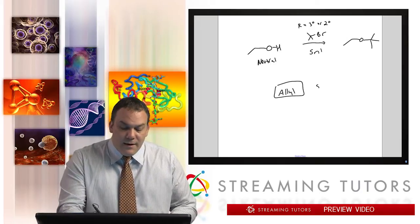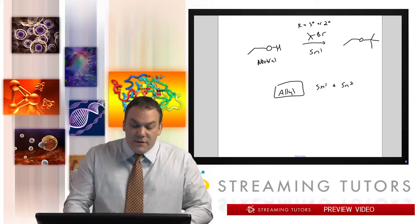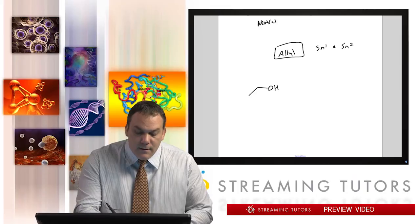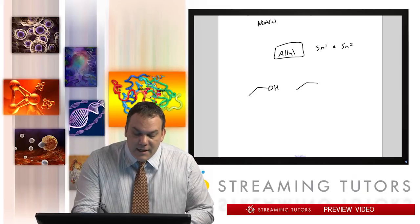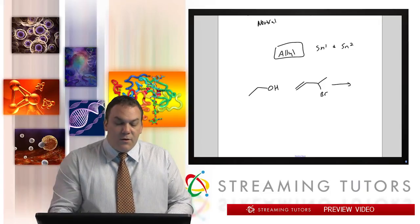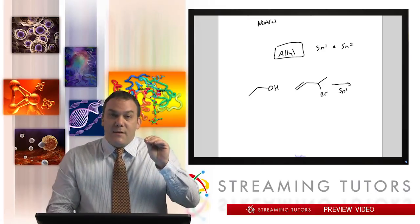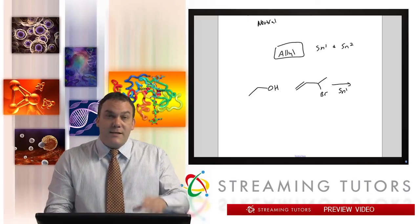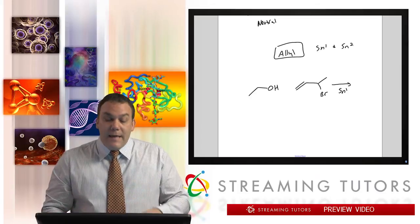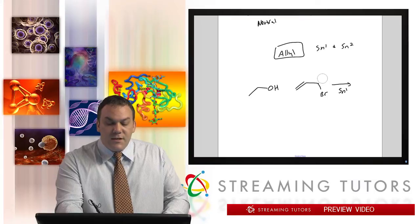Now another one that actually favors both: allyl is going to favor both SN1 and SN2. It depends on the degree of the allyl. So for example, if I have an alcohol and I treat it with, let's say, an allyl and then it has like a Br right there, well then this right here is going to go through SN1. The reason why I say that is because the alcohol is neutral—it's not negative—so that tells me SN1 is favored over SN2.